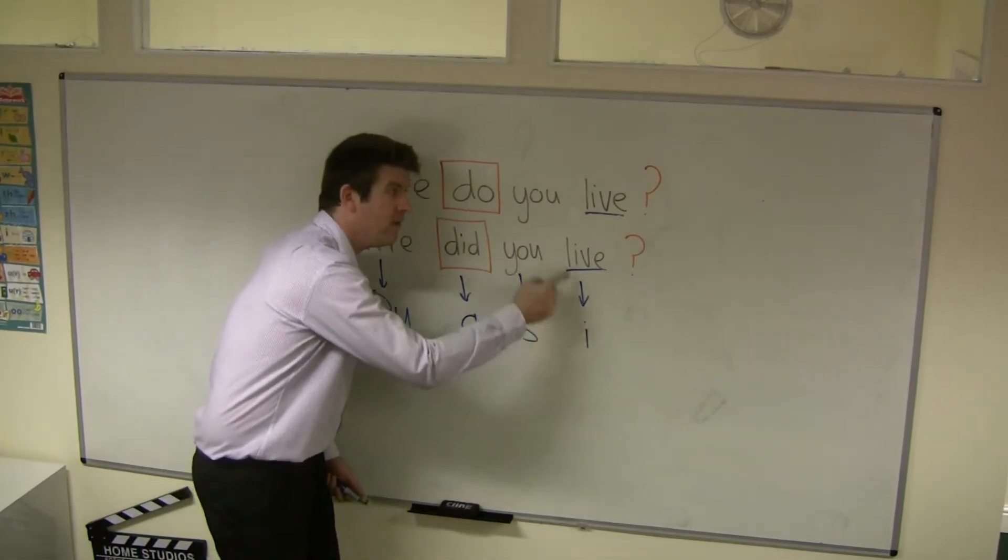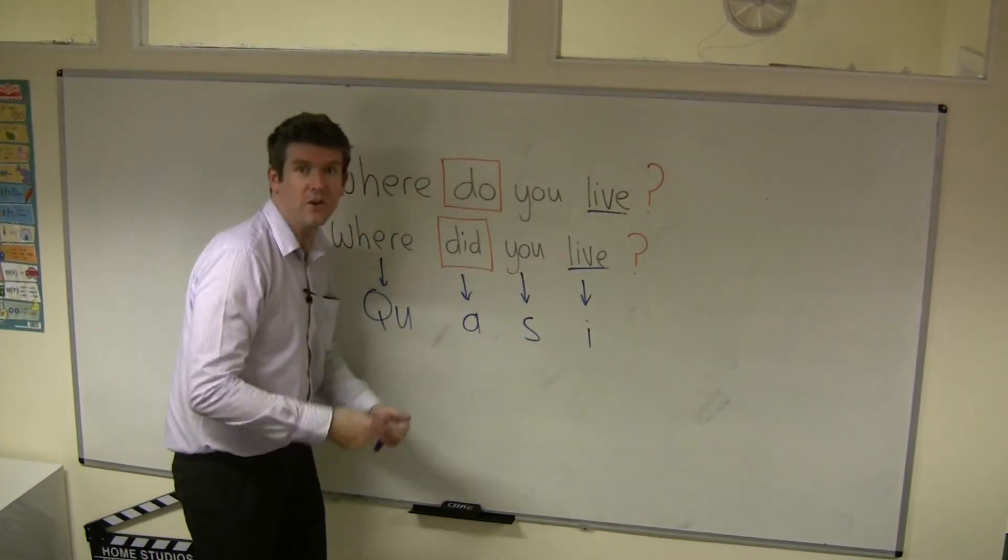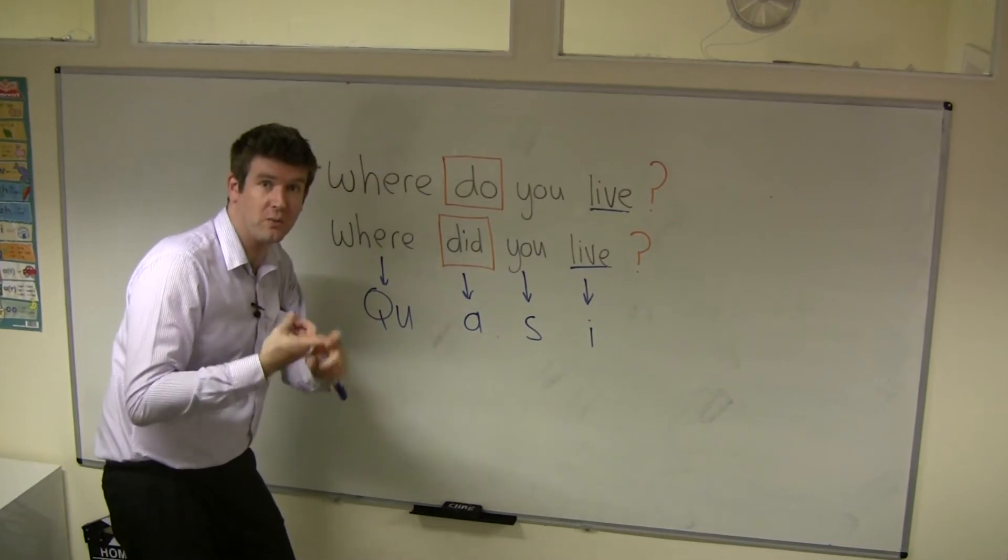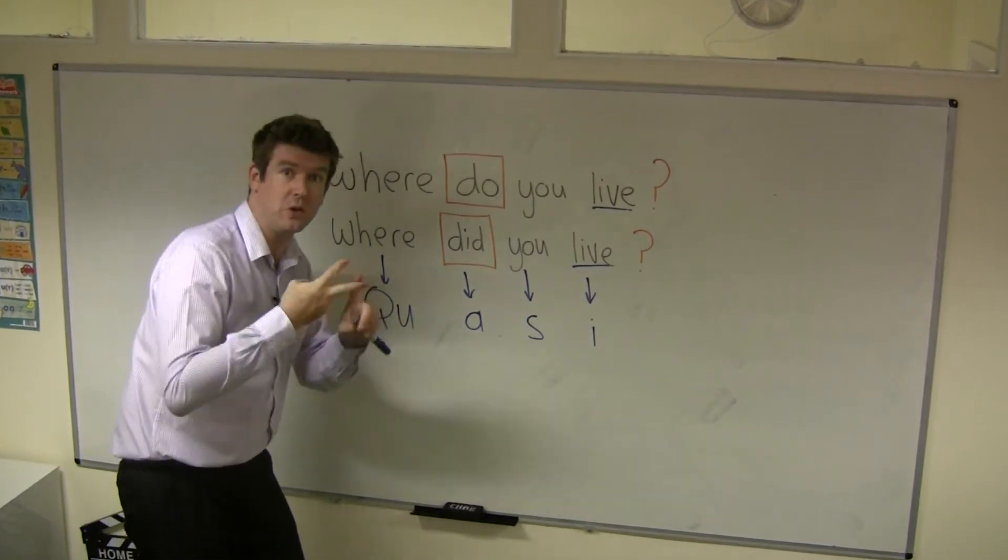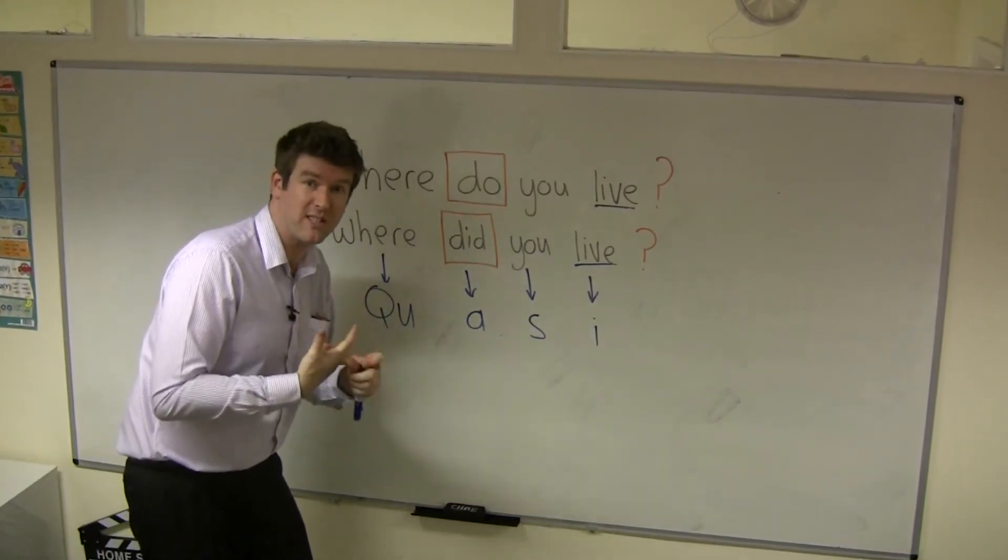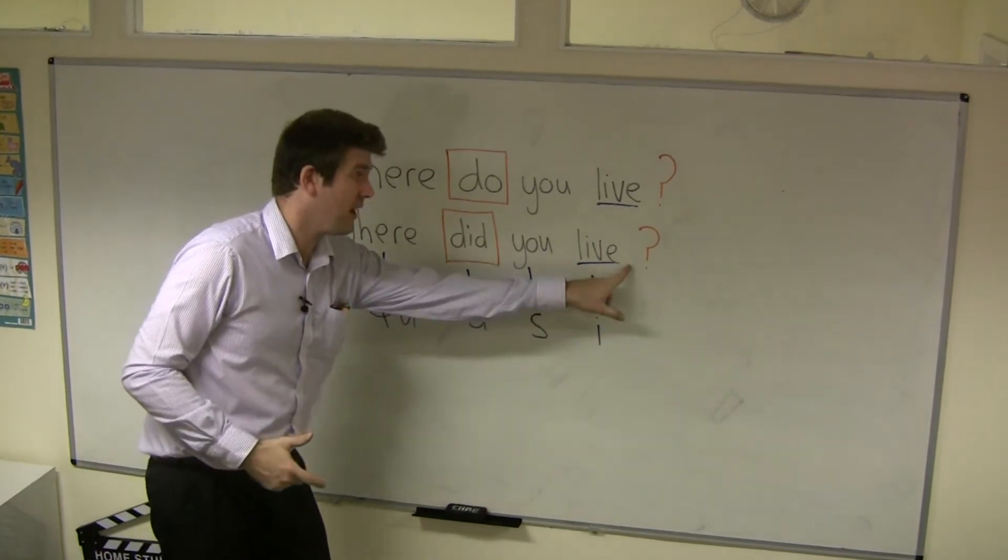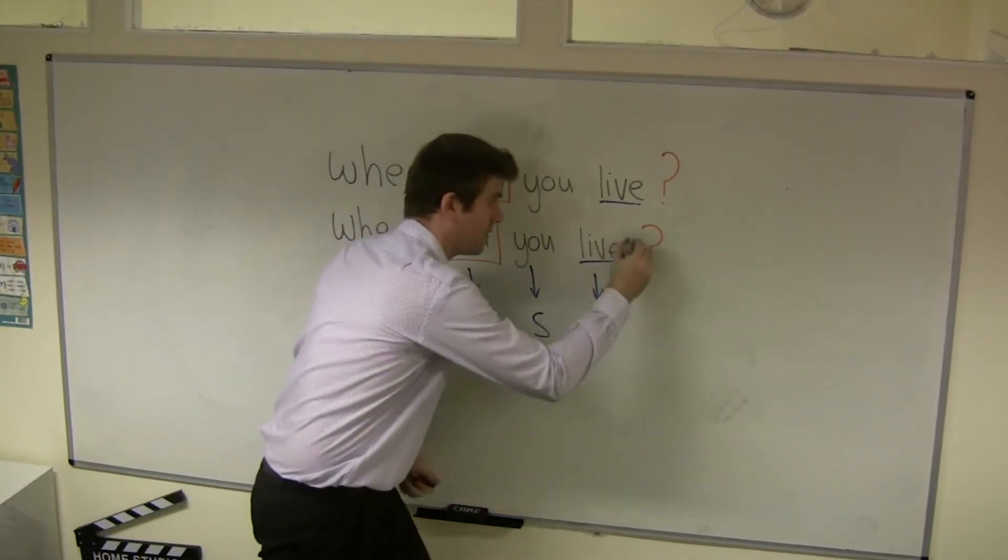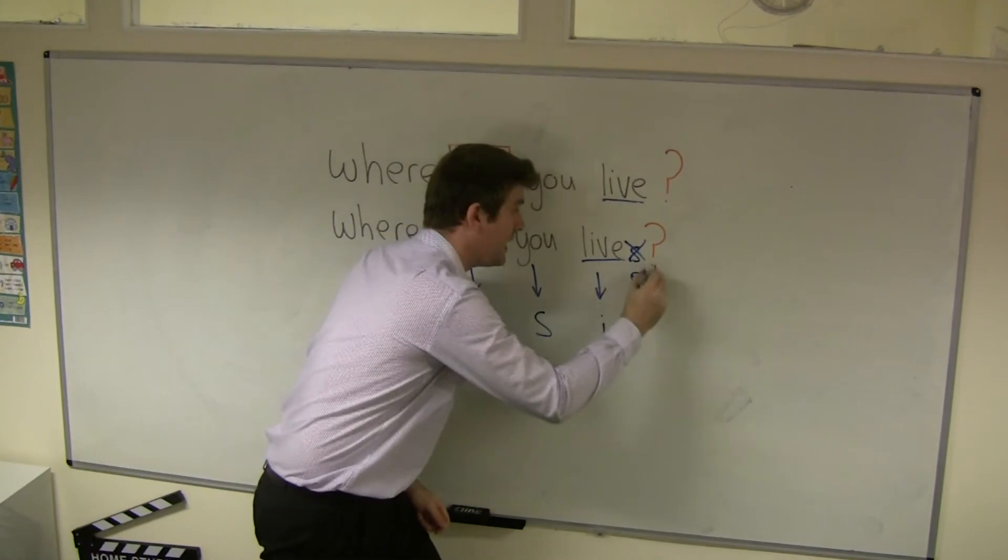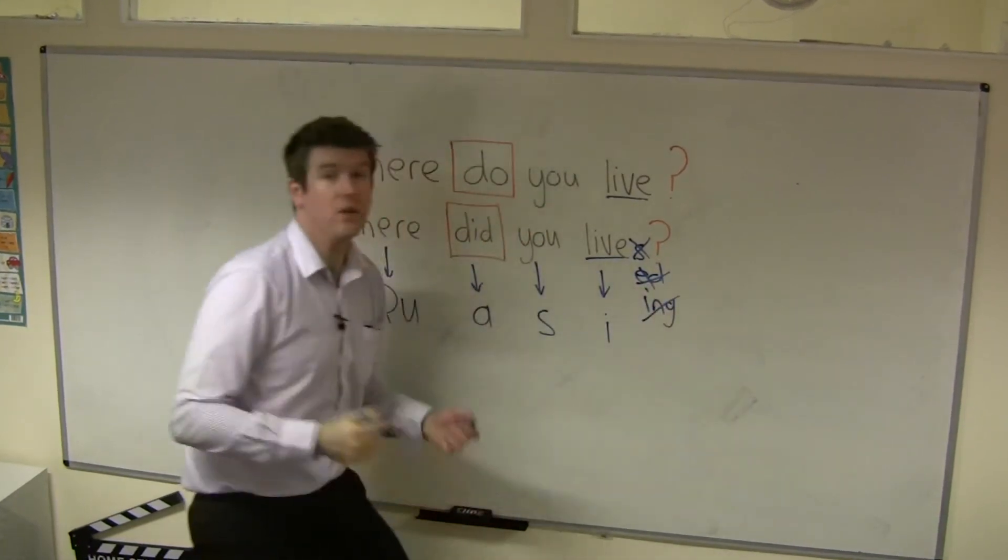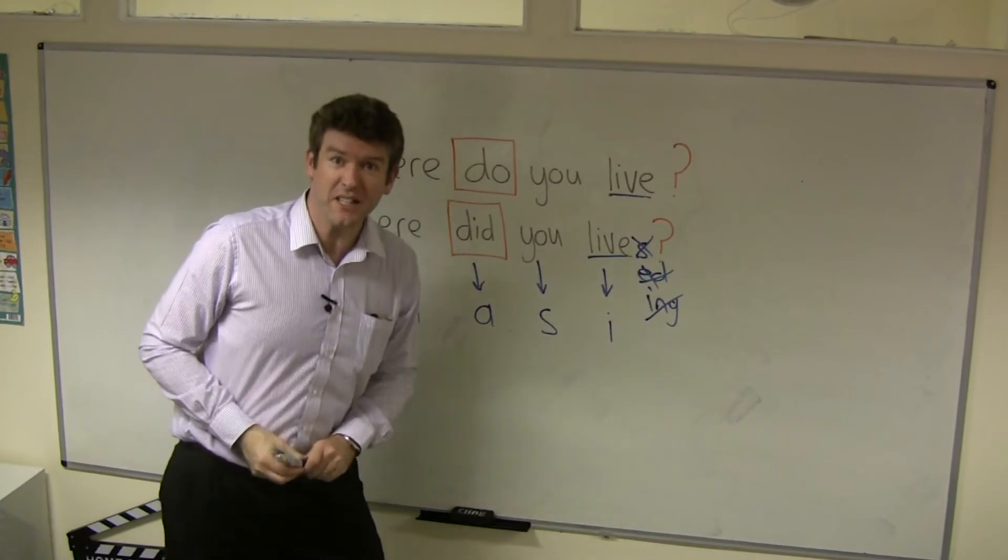And I for verb infinitive. When you use the question with an auxiliary verb, when you use the negative with the auxiliary verb, don't have S here, don't have ED here, don't have ING here, just the verb infinitive.